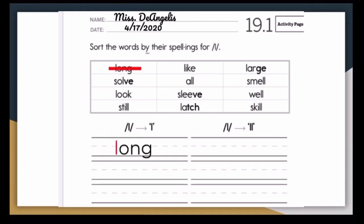Right. Solve. Where does solve belong on the chart? Right. In the first column. How about look? Look. What column does look belong in? You got it. The L column. How about the word still? Where does still belong? Great job.